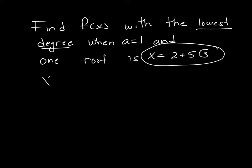So the idea behind this is if x is equal to 2 plus 5 square root of 3, then the second root that must exist is 2 minus 5 square root of 3.